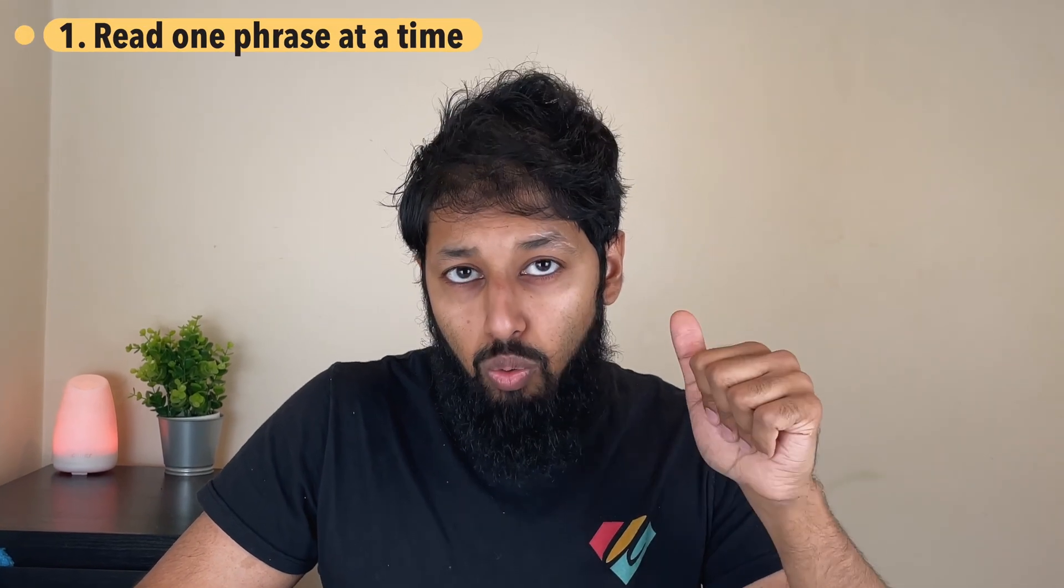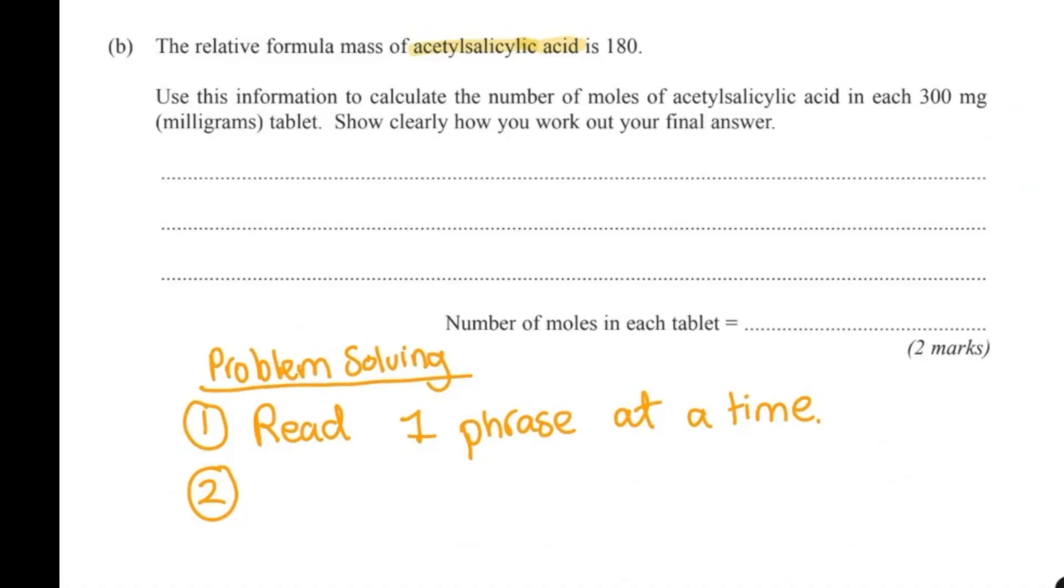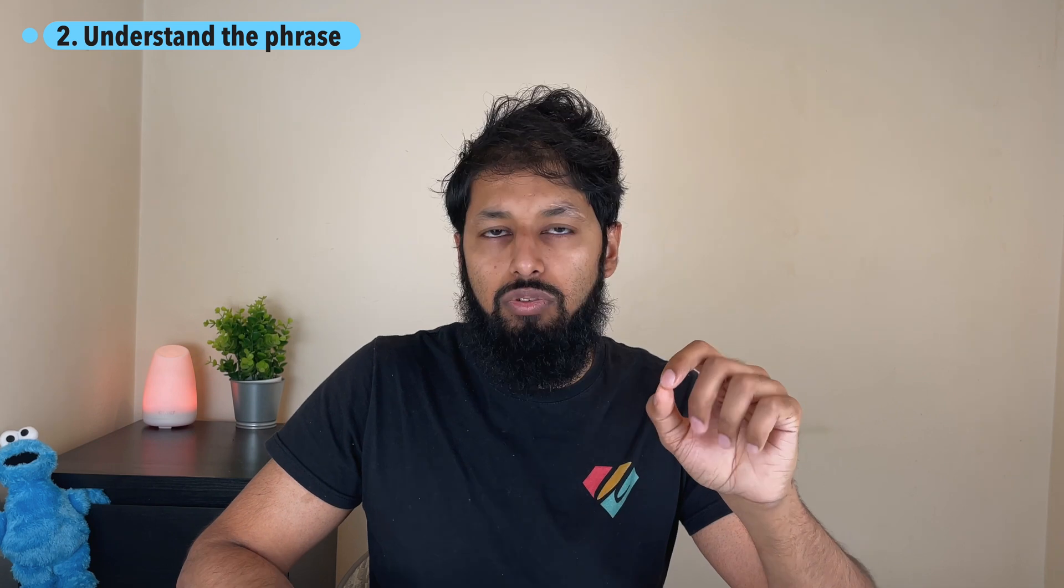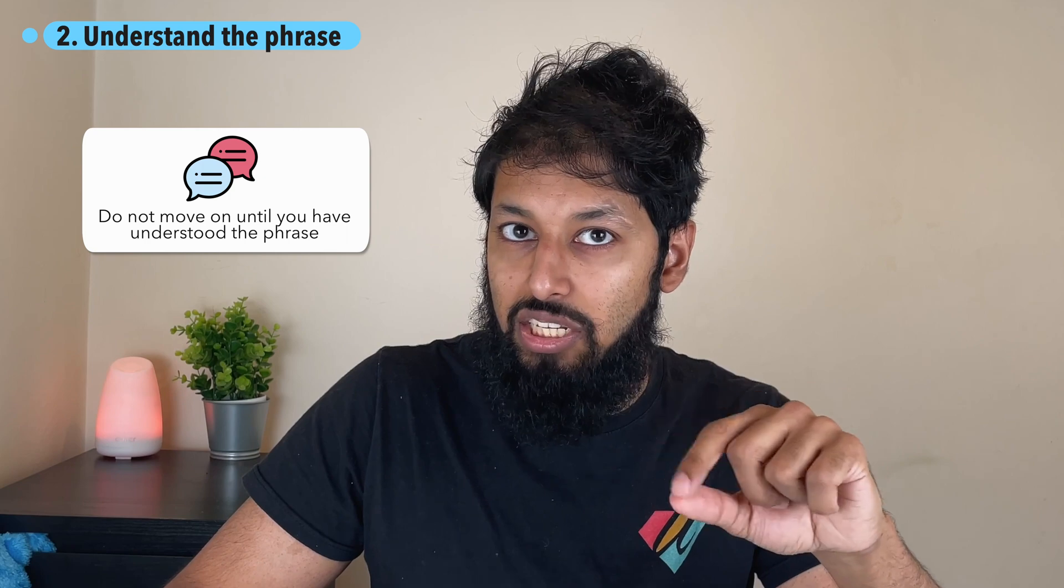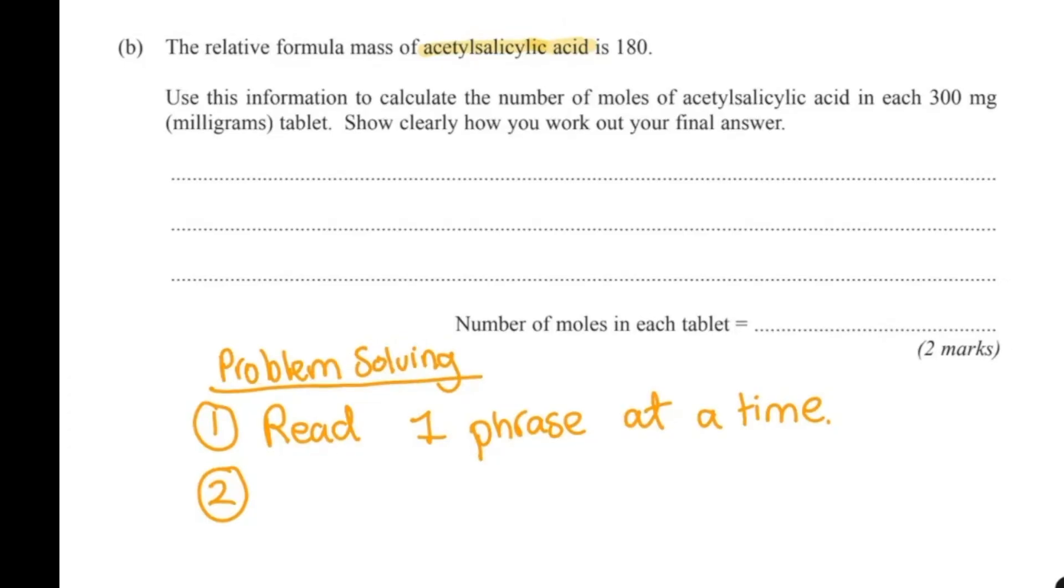One of the ways they can make a question scary is by using unfamiliar terms, but the logic will always be the same. Here are my steps that I would recommend that you utilize and they might sound a bit babyish but I've made them like that on purpose. Number one: read one phrase at a time. The relative formula mass of acetylsalicylic acid is 180. Number two: understand the phrase.